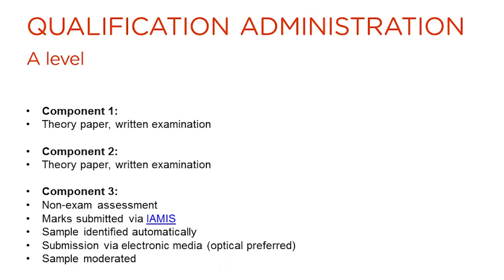The administration of the course has been designed to be as simple as possible. At A-Level, Components 1 and 2 are assessed via written examination papers. Component 3 is completed in the centre, marked by teachers with internal standardisation and authentication of work. Marks are submitted via YAMIS, EDUCAS's internal assessment mark input system. Samples are identified by the system and work is submitted via electronic media. Optical media is preferred — for instance CD or DVD — as this is less susceptible to damage during transit than other methods. The sample of work is then moderated.